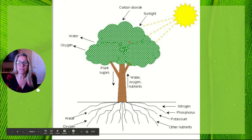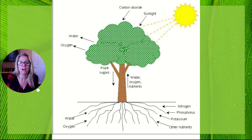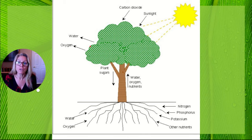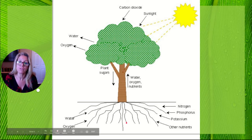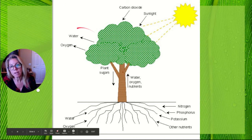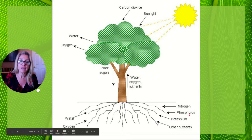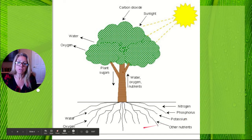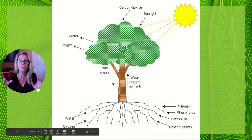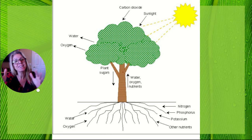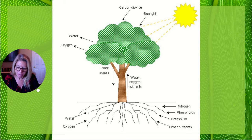Byproducts of photosynthesis are oxygen, which can be released out through the same openings that let the CO2 in, and glucose sugar. Plants may use that sugar for their own cellular respiration or store it, maybe down in the roots. You can also see loss of water via transpiration — water evaporating out the open stomata — and water and nutrients like nitrogen, phosphorus, and potassium moving up. Notice the roots also need oxygen because they do cellular respiration, not photosynthesis.